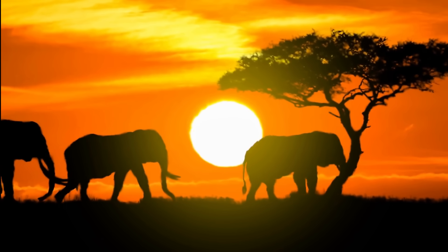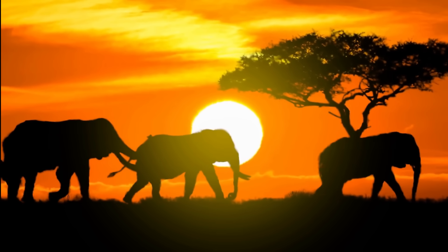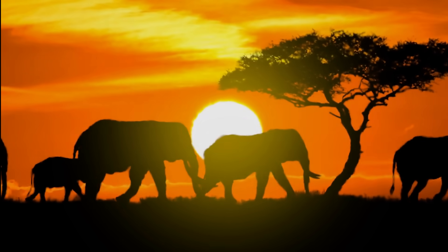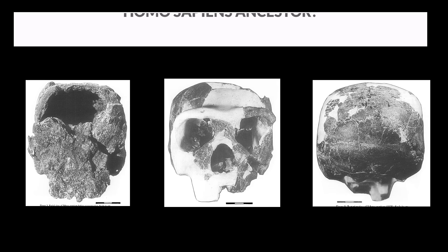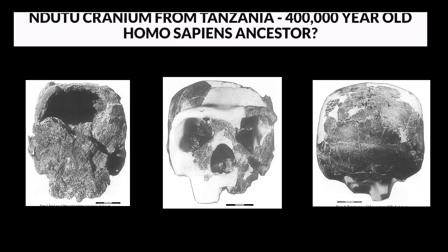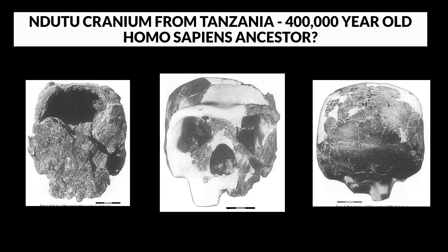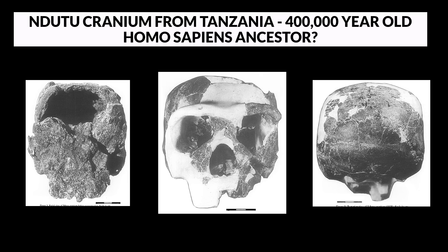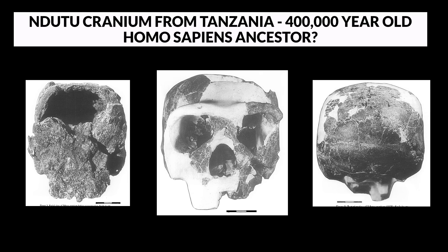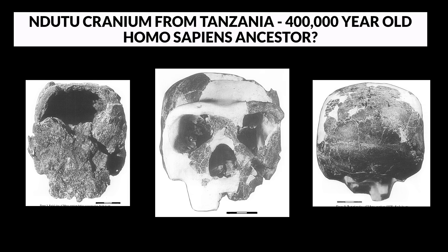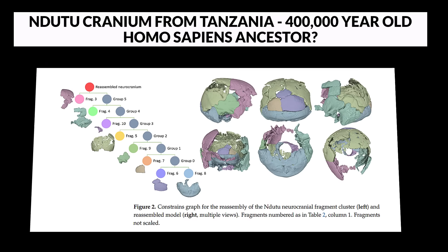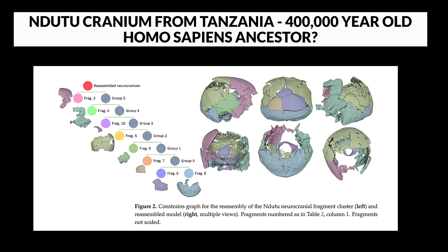Lake Ndutu is a seasonal lake in the Serengeti, adjacent to the main gorge at Olduvai. During September and October 1973, the Tanzanian Department of Antiquities conducted an excavation of the exposed flats of the western shoreline of Lake Ndutu. The excavation site had considerable amounts of lithic and faunal material on the surface. Preliminary dating of bone found in the first occupational level yielded a general age of 500,000 to 600,000 years, while other estimates based on association with Olduvai beds suggest an age approaching 400,000 years.